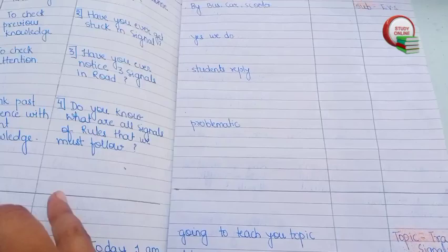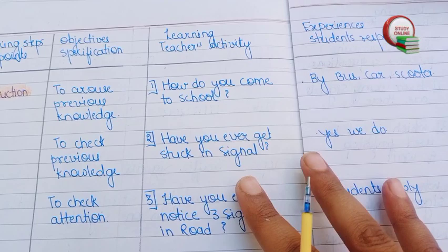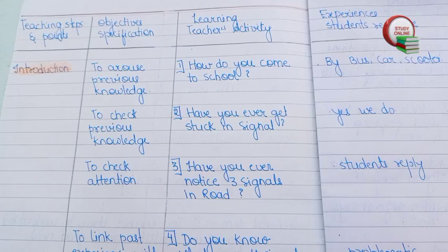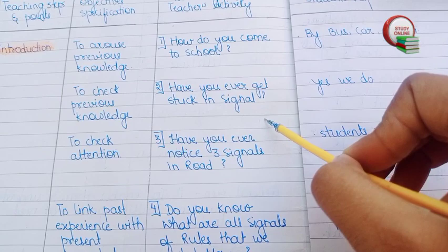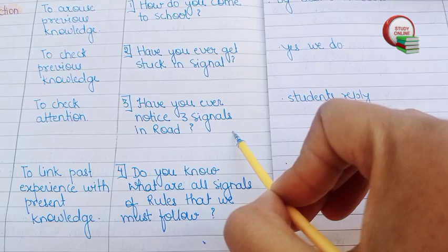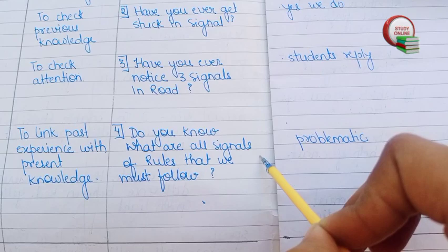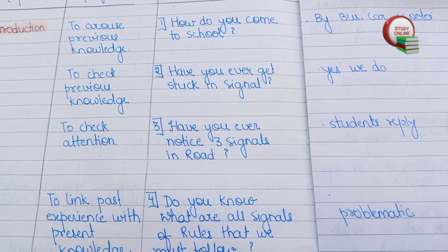Now let's turn the page and see the introduction part of our lesson plan, which is really important. I have added four questions here. First question: how do you come to school? Students will answer — bus, car, whatever. Second: have you ever got stuck at a signal? Students will answer yes. Third: have you ever noticed three signals on the road? Students answer yes or no. Fourth: do you know what all signals on roads we must follow? That would be problematic for them to answer.